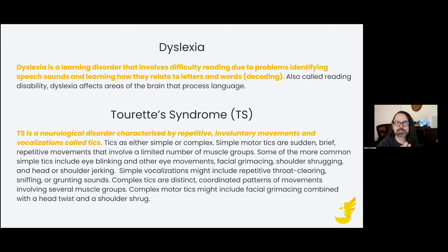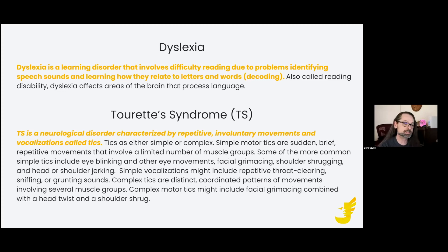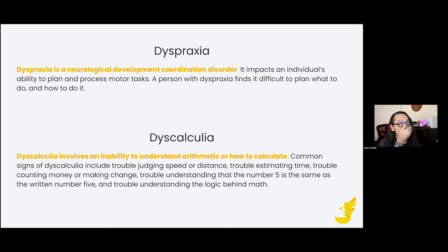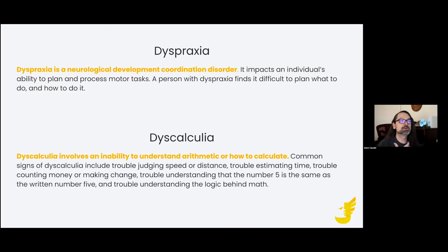Tourette syndrome isn't just about randomly shouting out vulgarities or profanities. People with Tourette syndrome can have repetitive and involuntary movements or vocalizations called tics. Dyspraxia is a developmental coordination disorder — it can impact an individual's ability to plan and process motor tasks. A person with dyspraxia might find it difficult to plan what to do and how to do it.